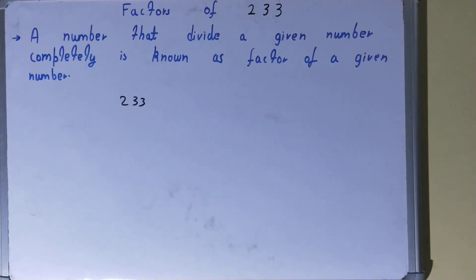about the number is whether the number is a prime number or a composite number. Now this thing is very important. Why? Because if the number is a prime number, then your work becomes a lot simpler.